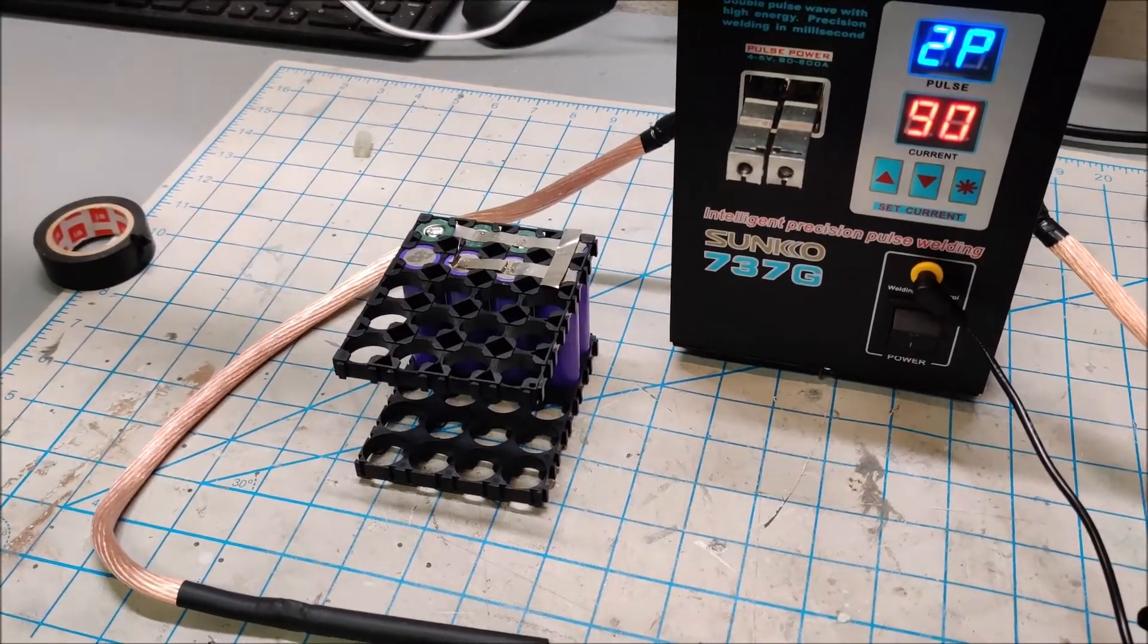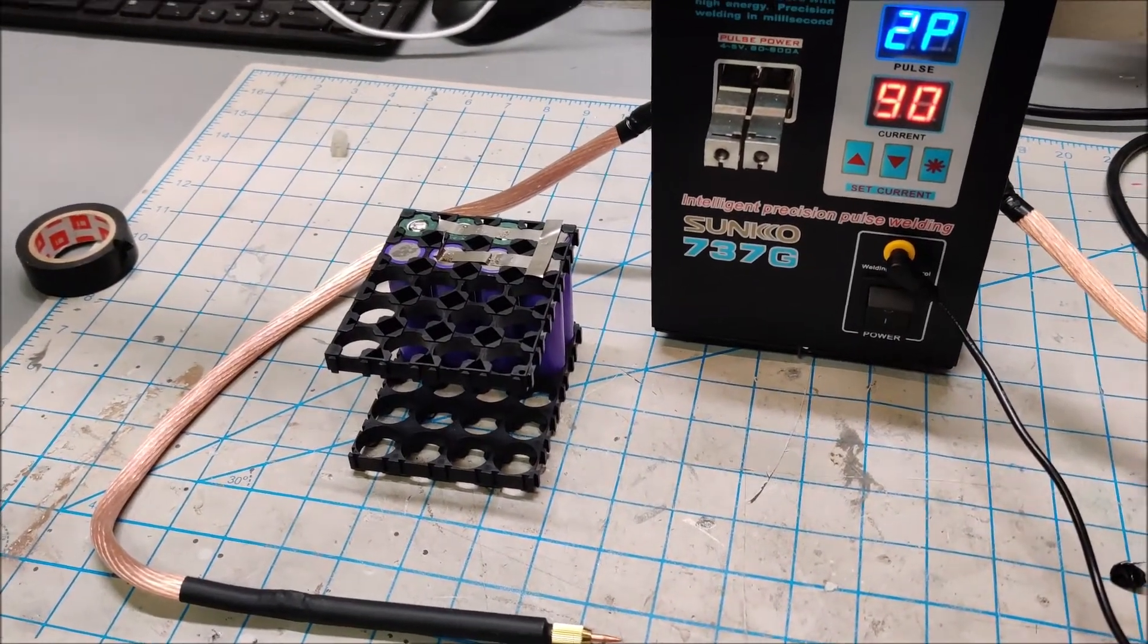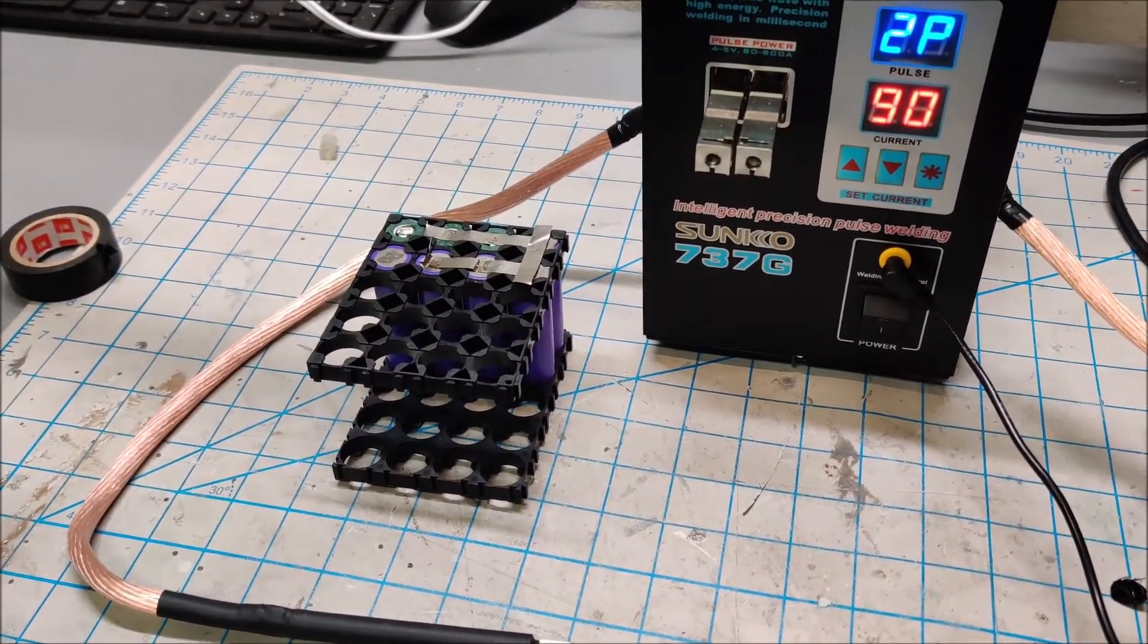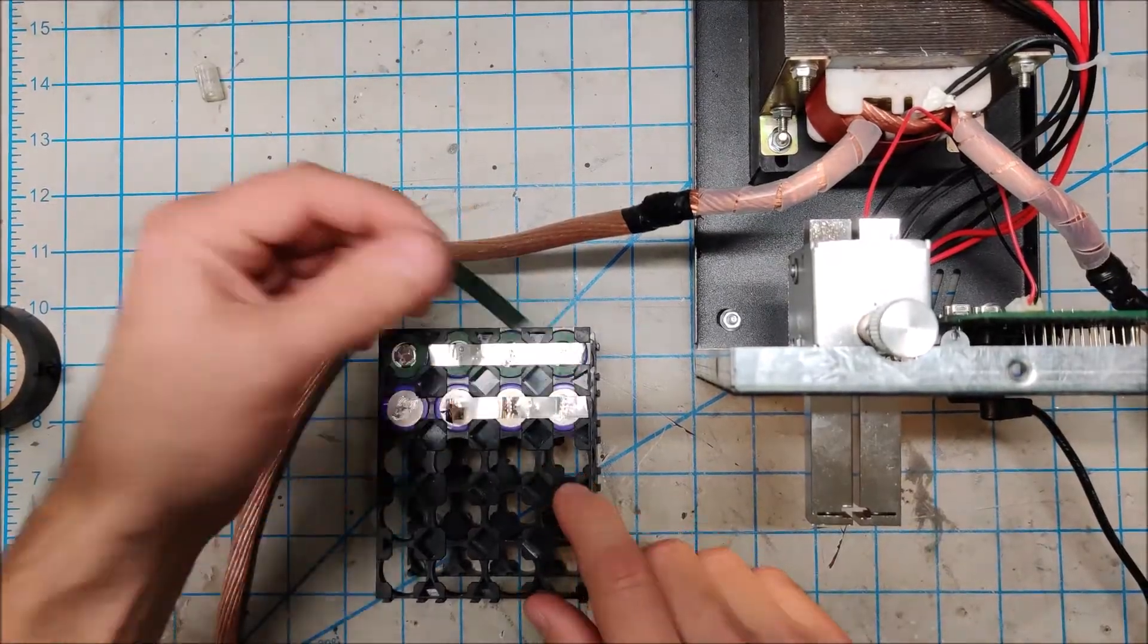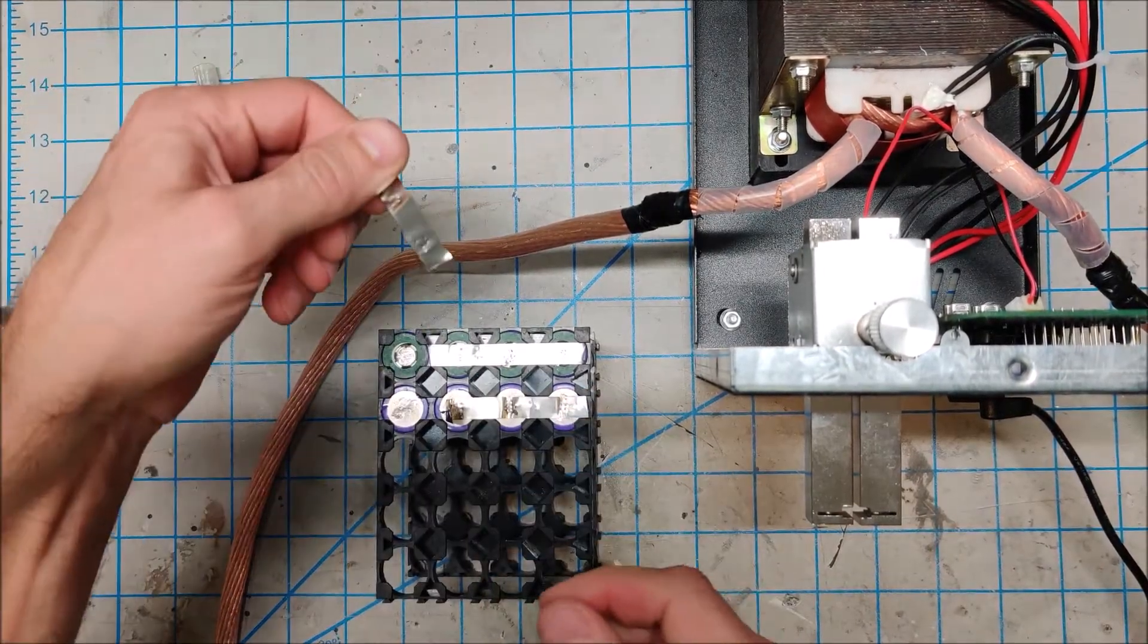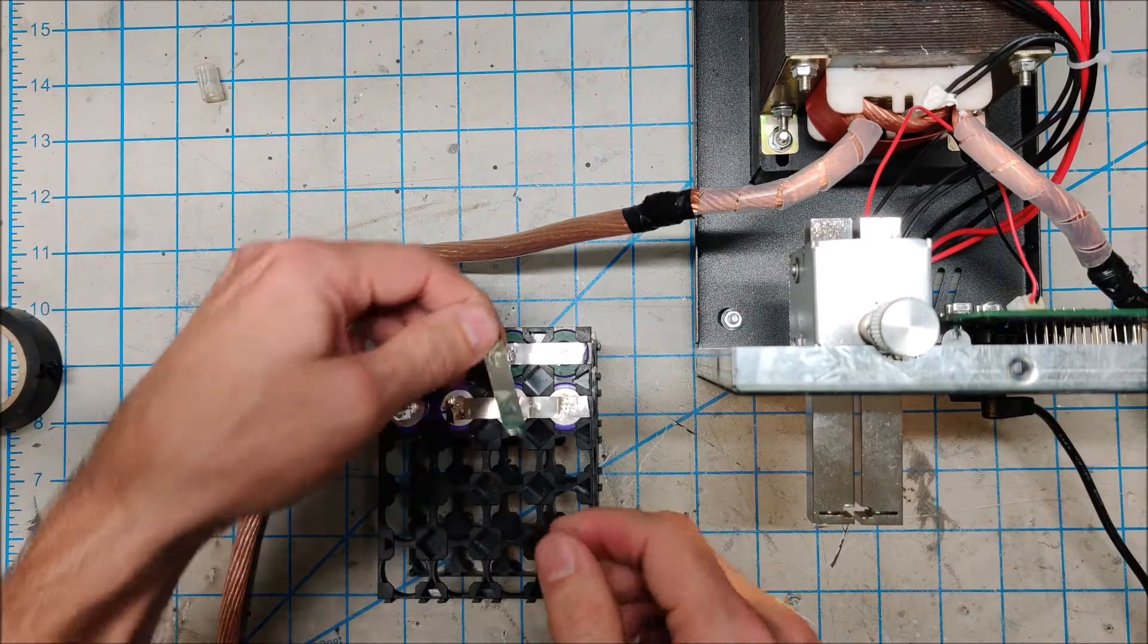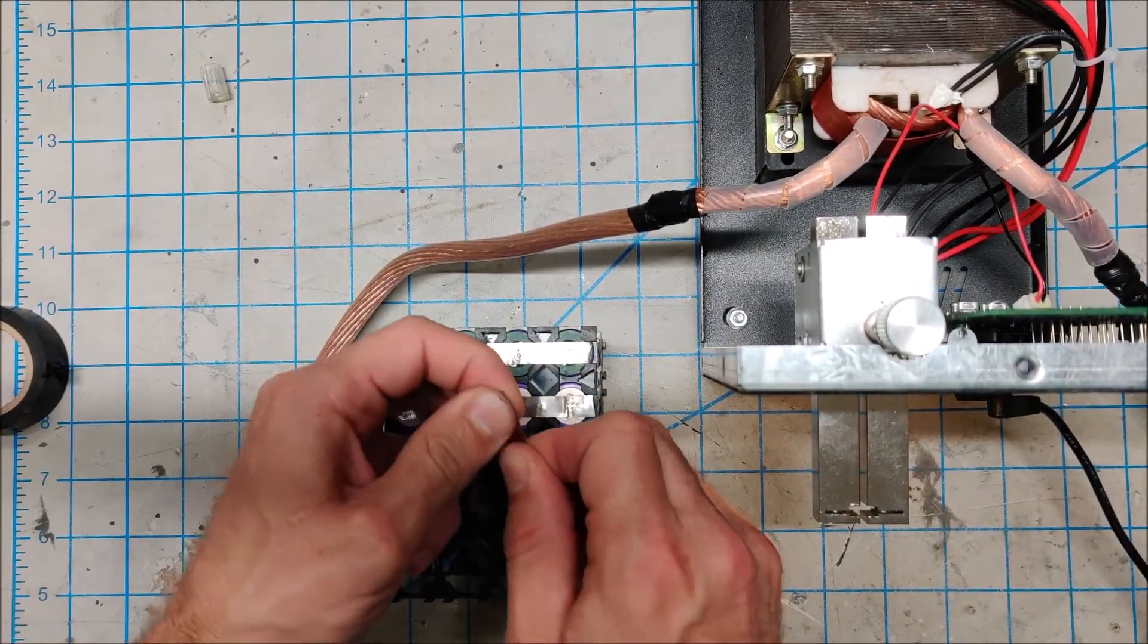I just cannot recommend the 737G. I'll show you how this thing performs even with my modified needles—it's pitiful. Here is a piece of the 0.15, the slightly thicker stuff. This is what I would expect a plug-in unit to be able to spot weld.